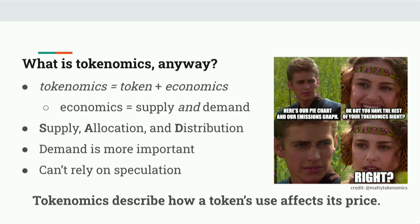In short, tokenomics describes how a token's use affects its price. Tokenomics is made up of two words — token and economics — where economics is made up of supply and demand. And it's surprising to me, but something I want to highlight in my talk is that demand is actually much more important than supply in your tokenomics.